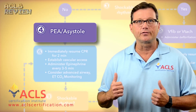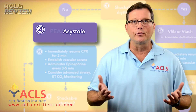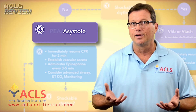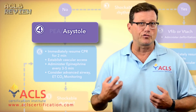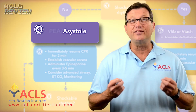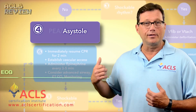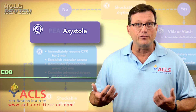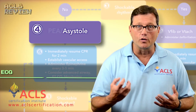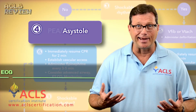Starting with asystole — the name asystole has nothing to do with the rhythm. It doesn't describe the electrical activity. Systole is actually Greek for contractions. 'A' as a prefix means without. So asystole means without contractions. On the monitor it'll appear like this: a flat line. There is no electrical activity in the heart, thus no contractions, no cardiac output.